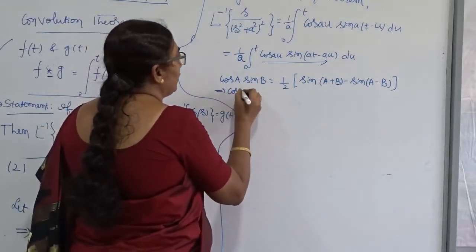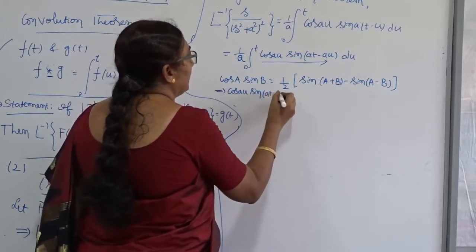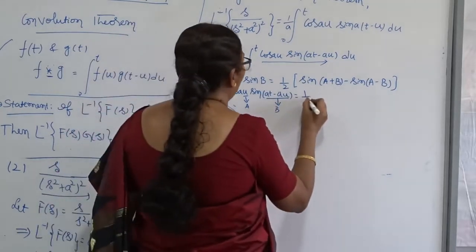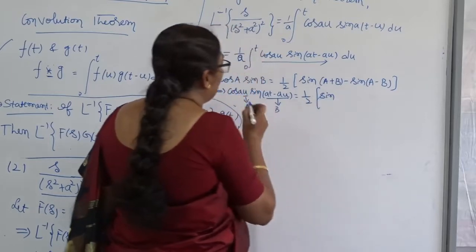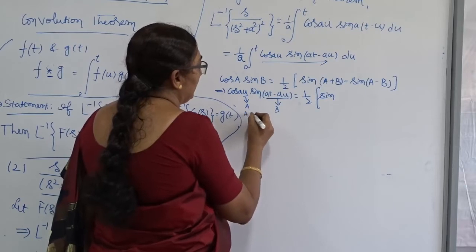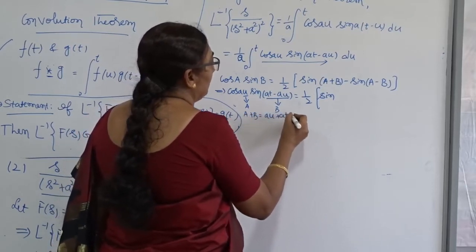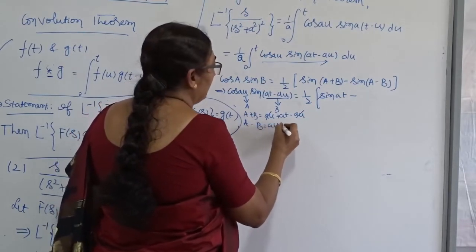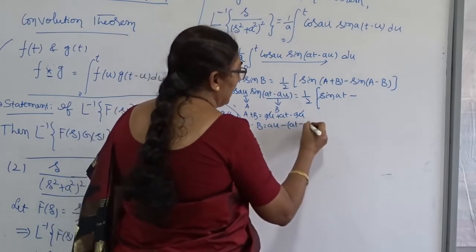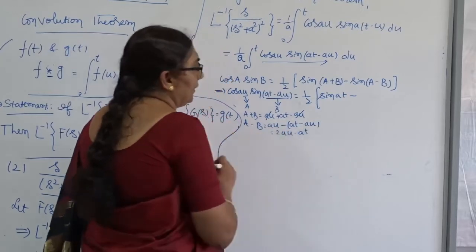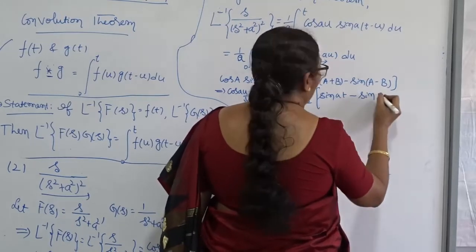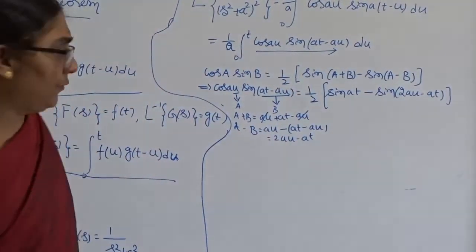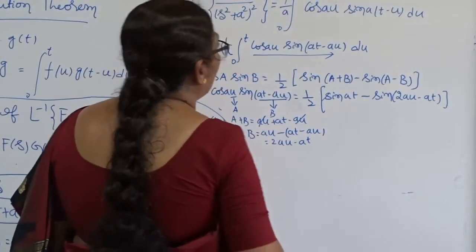So cos(au) · sin(at − au): here A = au and B = at − au. Using the formula, this equals ½[sin(au + at − au) − sin(au − (at − au))], which gives ½[sin(at) − sin(2au − at)]. Therefore cos(au)·sin(at − au) = ½[sin(at) − sin(2au − at)].